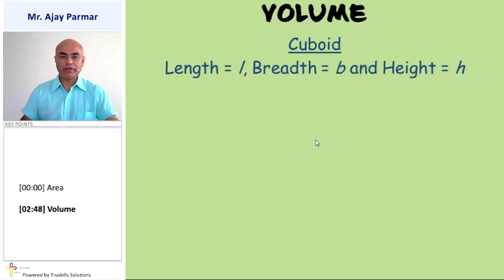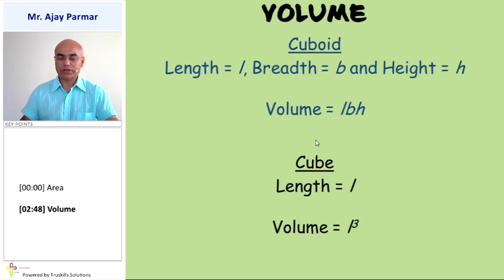For a cuboid, if length, breadth and height are represented by L, B and H, then the volume would be L into B into H. Whereas for a cube, the length if represented by L, then its volume is going to be L cube.